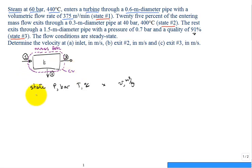Now, let's label our states. This is one. You can make a little note, say, this is an inlet state or this is an exit state two. This is an exit state three. Go ahead and put our pressures down in bar. So it's 60 bar, 440 degrees C.